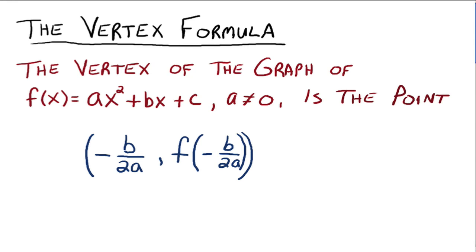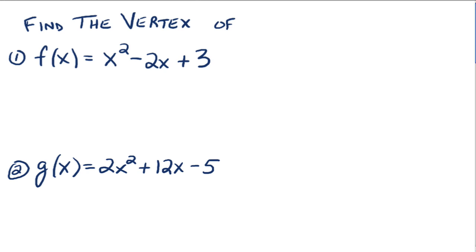All right, let's try an example. All right, find the vertex of f(x) = x² - 2x + 3. All right, so everybody agrees it's a quadratic function. So a would be 1, b would be negative 2, and c would be 3. Everybody see where that's coming from?